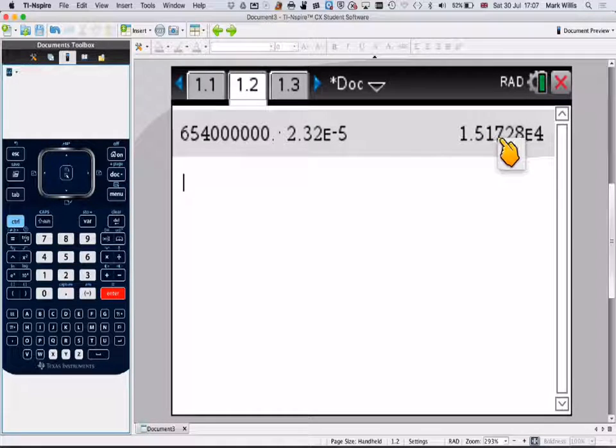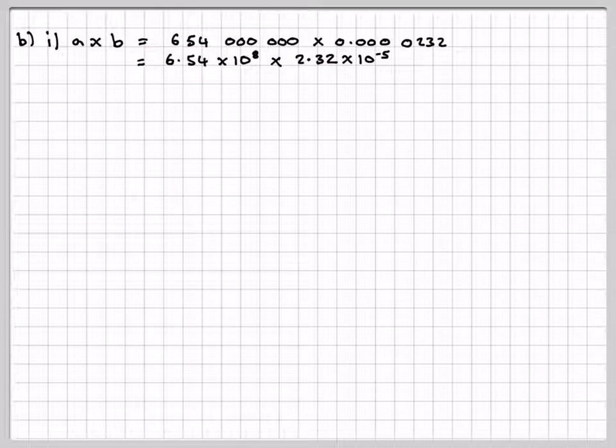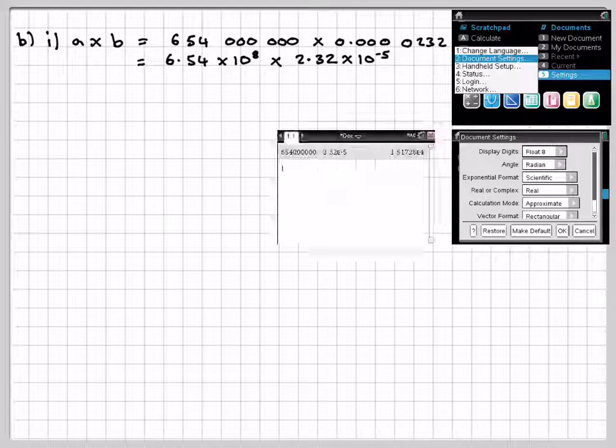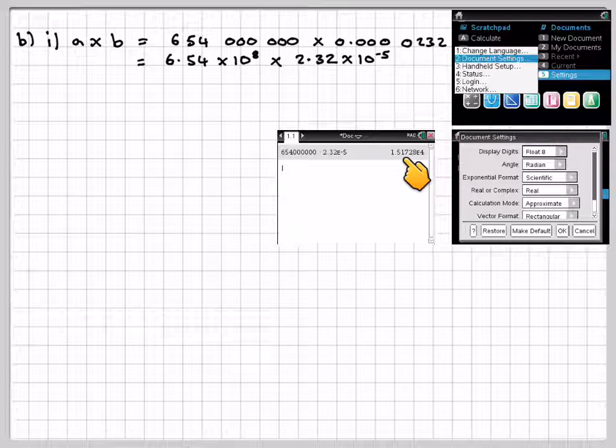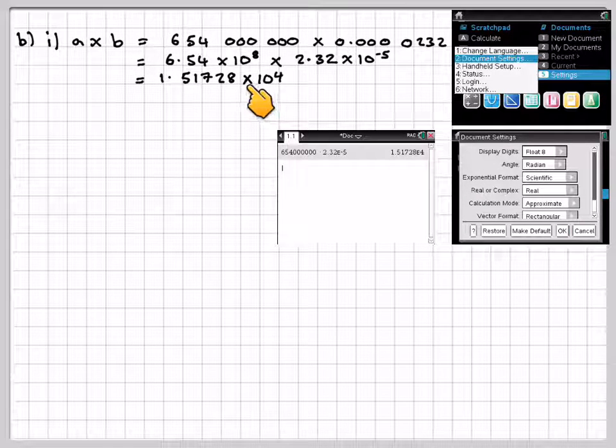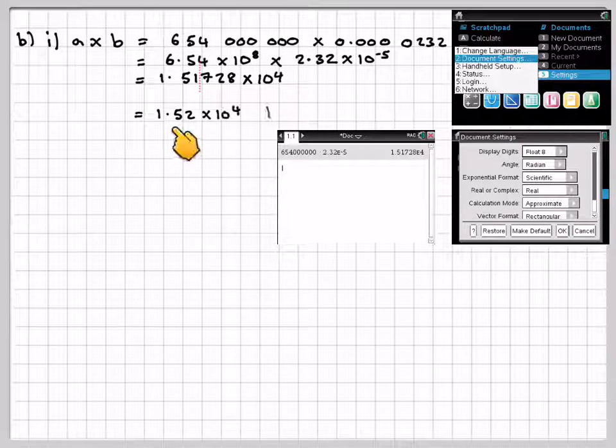So going back to my script here, there's a screenshot of the steps I just did. We've got 1.51728E to the 4. Now, the common mistake is to write that as E to the 4, but you need to convert it back into mathematical notation, which is times 10 to the 4. That's what the E4 means. Answer said to three significant figures. So that's the 1st, 2nd, 3rd. Draw a little line there. That 7 will make that 1 a 2. So the correct answer in standard form of three significant figures will be 1.52 times 10 to the 4.